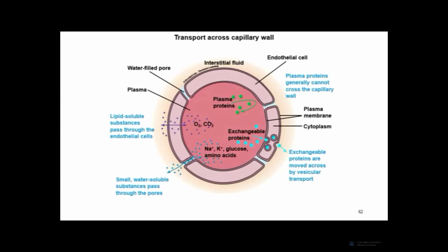Exchange is governed by simple diffusion: substances move down their concentration gradients. Oxygen moves into tissues where oxygen levels are low; carbon dioxide moves out of tissues where CO2 is high. Sodium, potassium, glucose, and amino acids move down their gradients. All these nutrients and gases are delivered based on their concentration gradients.